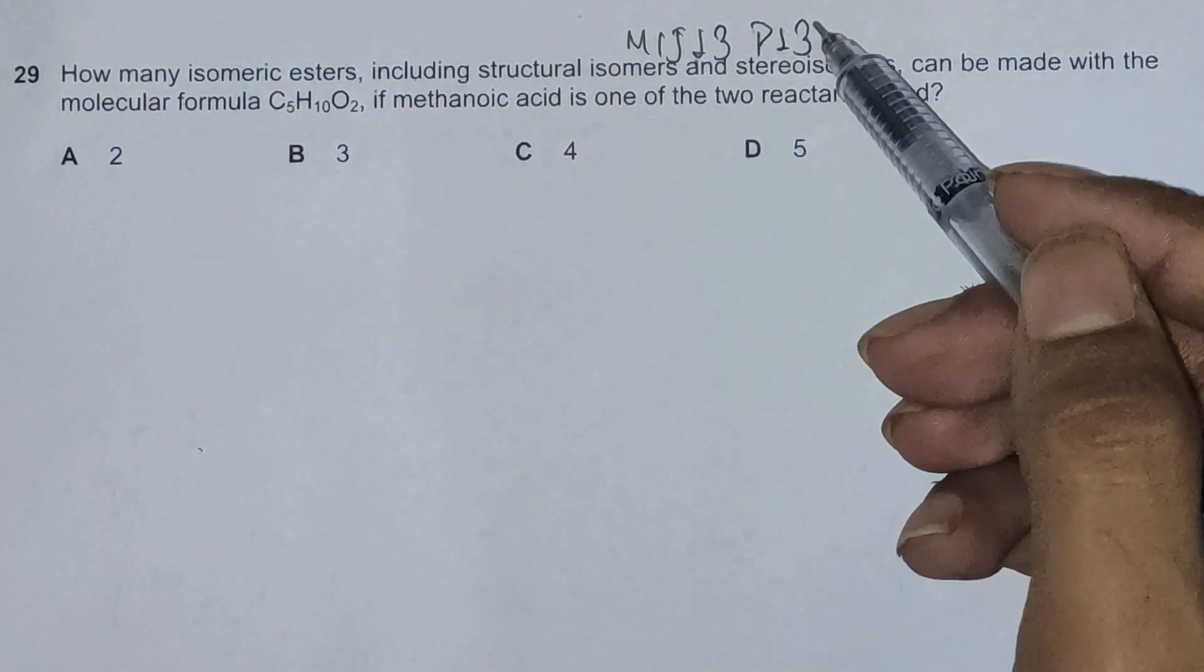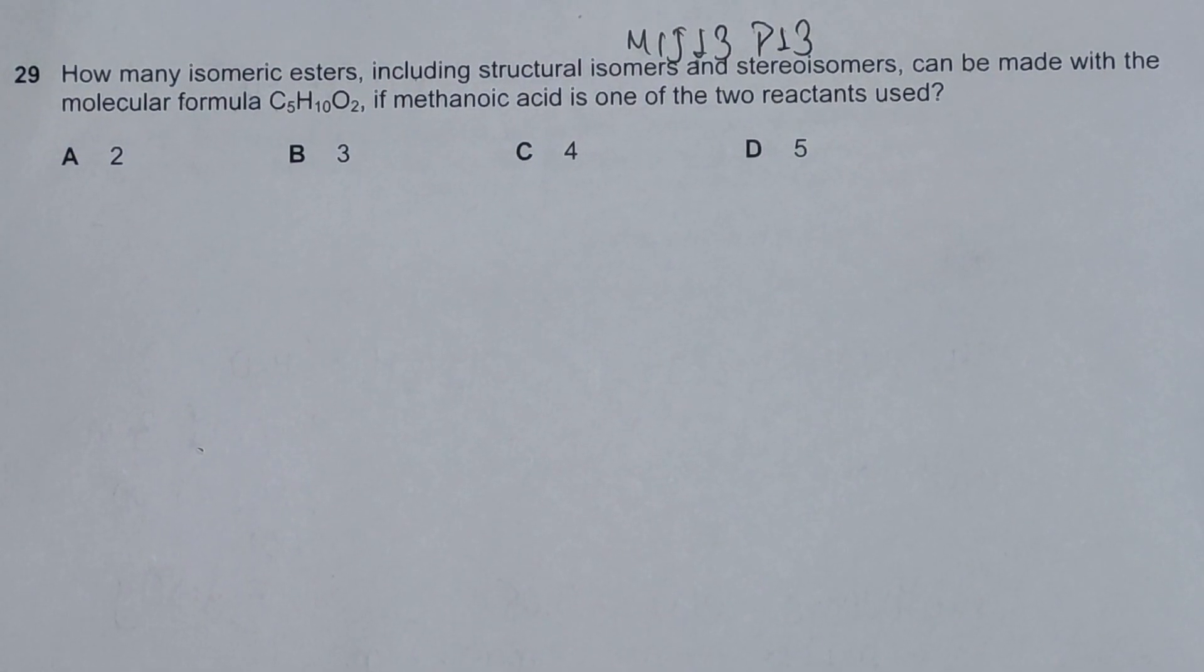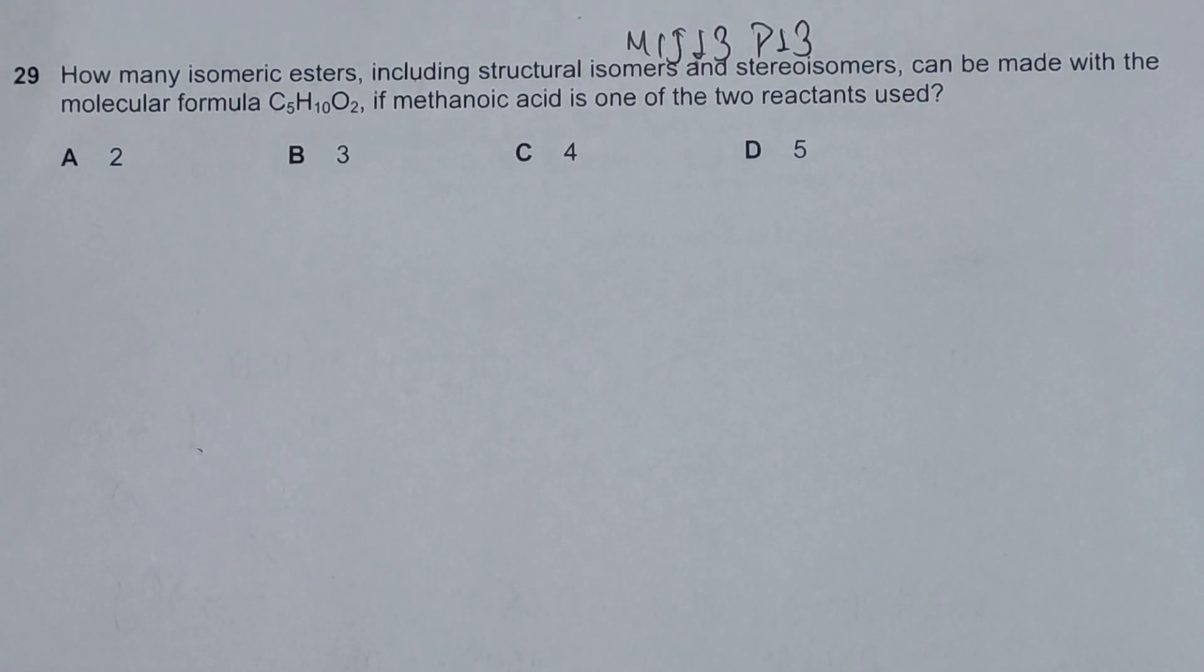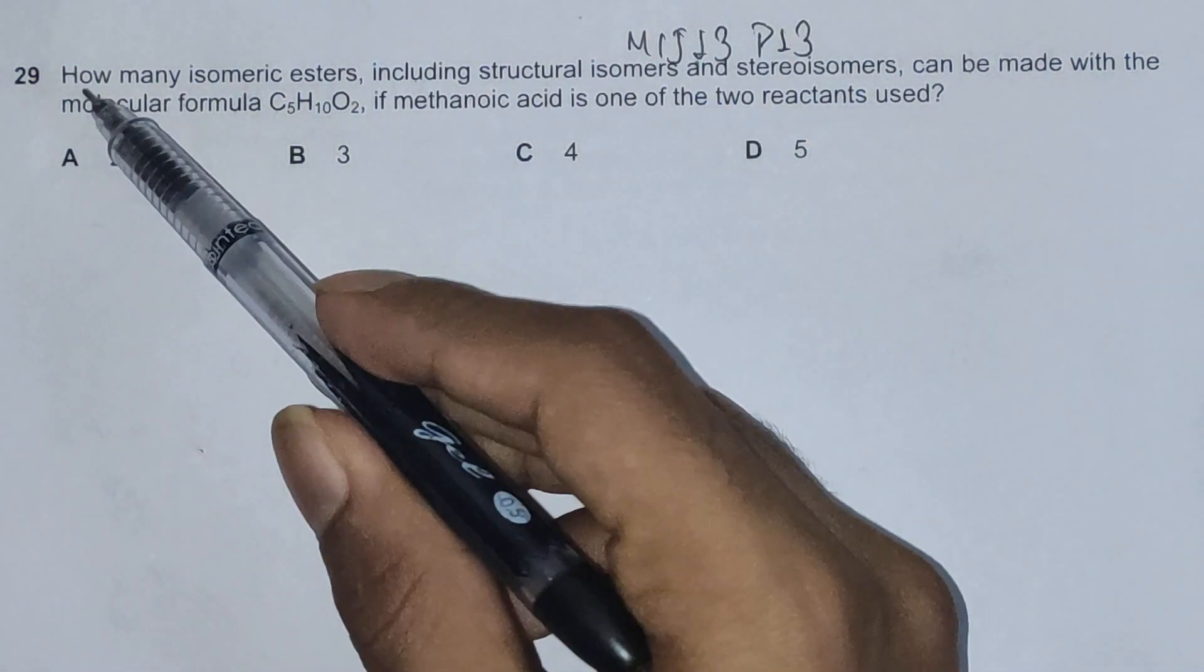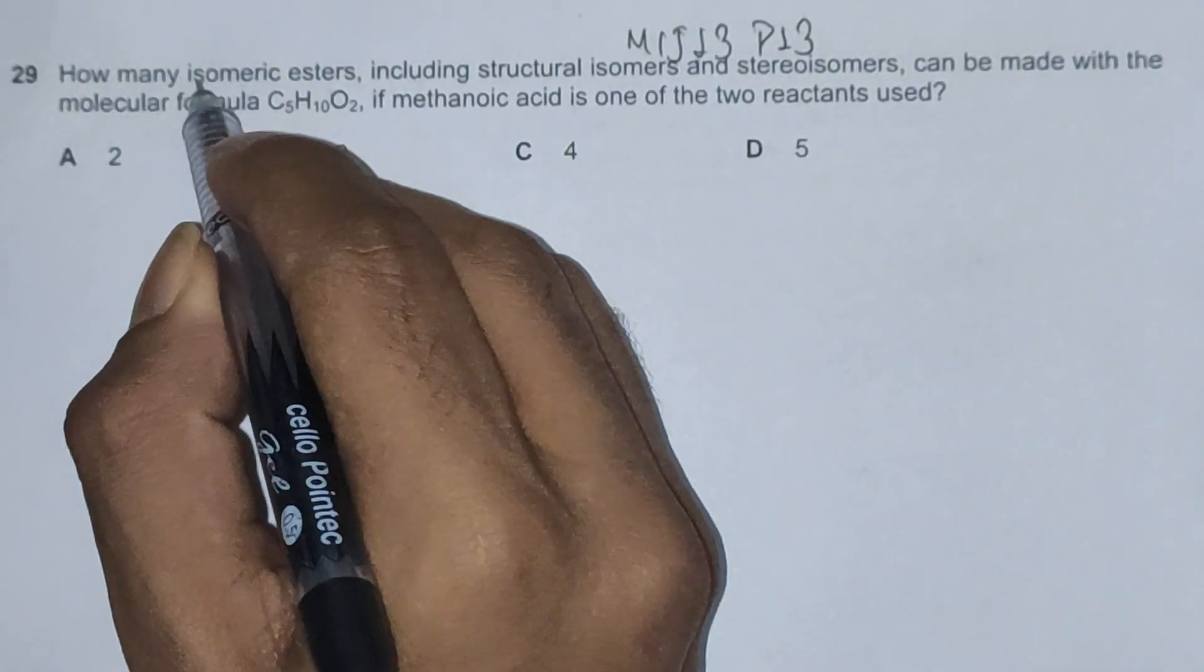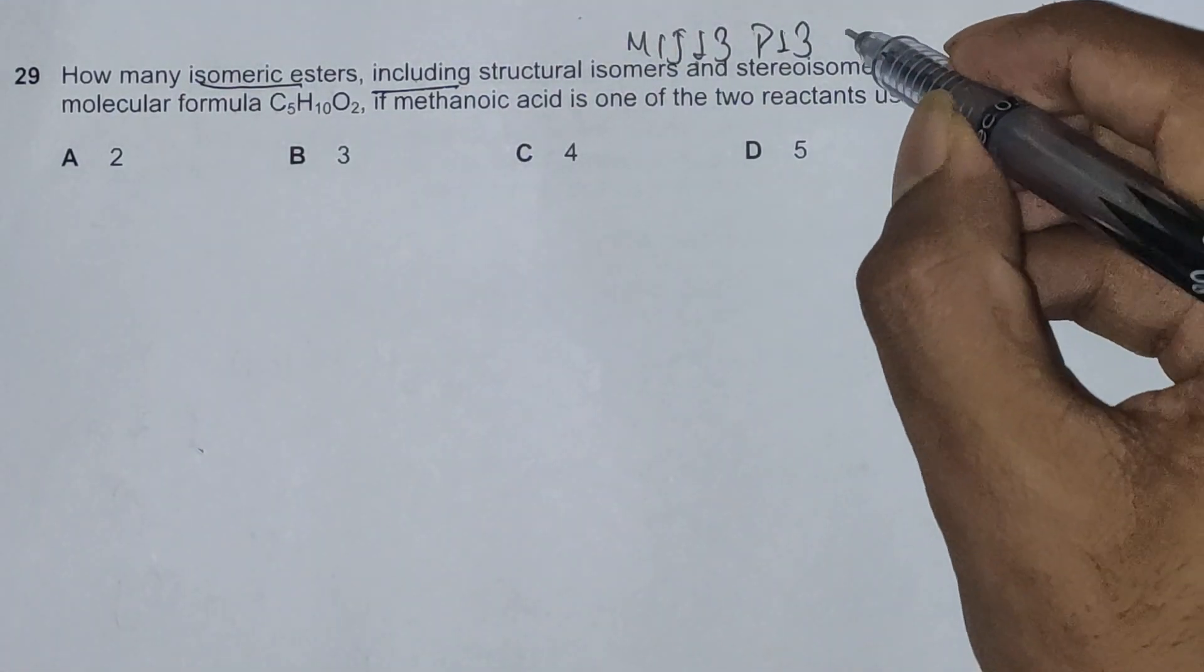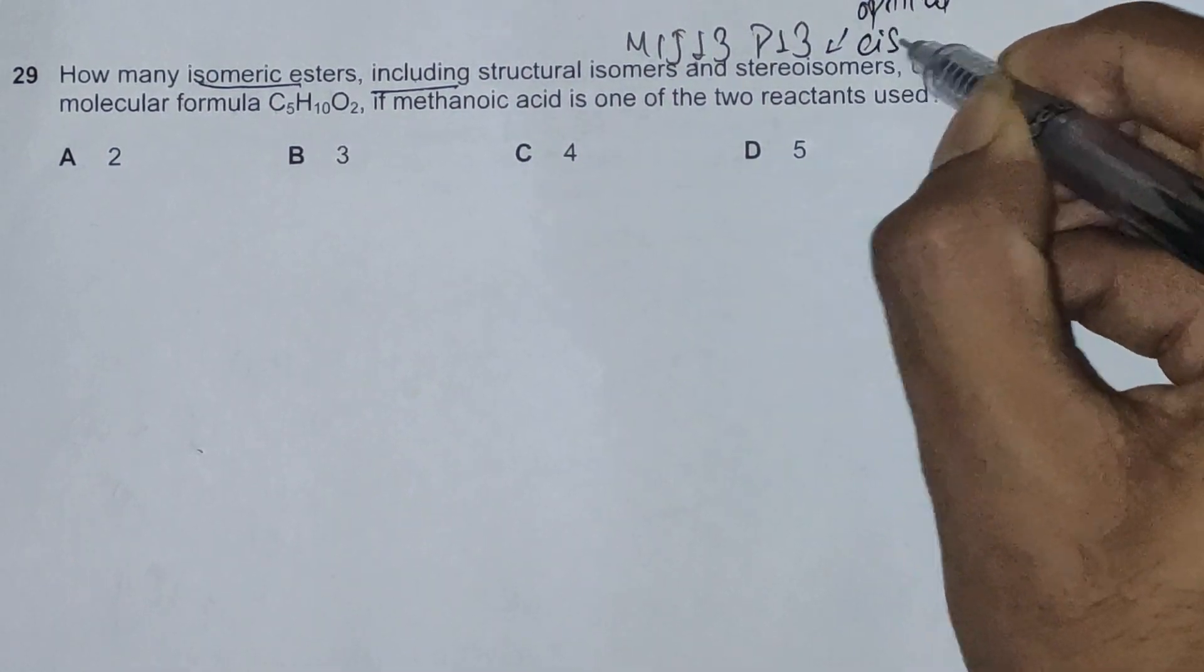Hello everyone, this is June 2013 question paper 1-3, question number 29. It's concerned with the introductory organic chemistry chapter and bit of esterification chapter - it's about carboxylic acid and its derivatives. The question asks how many isomeric esters, including structural isomers and stereoisomers (stereoisomers being optical isomers and cis-trans isomers, also known as E-Z isomers).